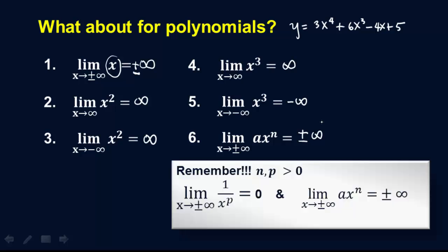So what do we observe? Remember, if we have, if we take the limit of ax to the n, where n is positive, then it's either plus or minus infinity. And, of course, when we take the reciprocal, then it's the opposite. The limit of 1 over x to the p is equal to 0.